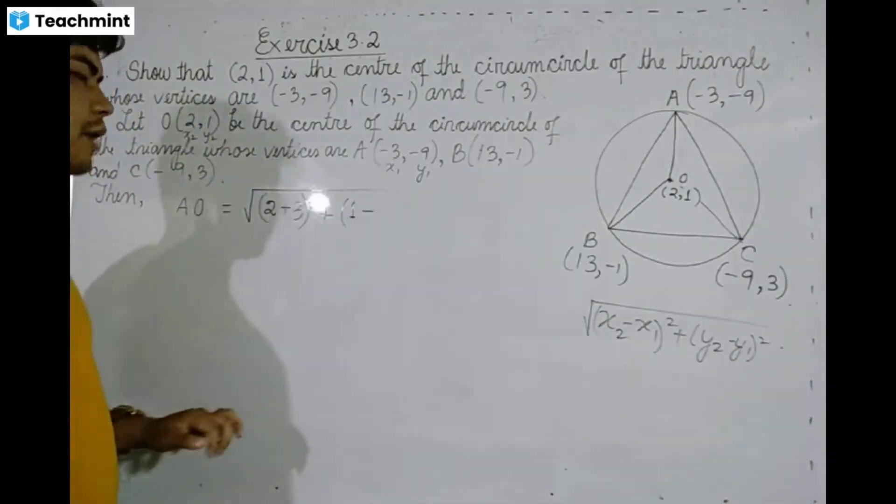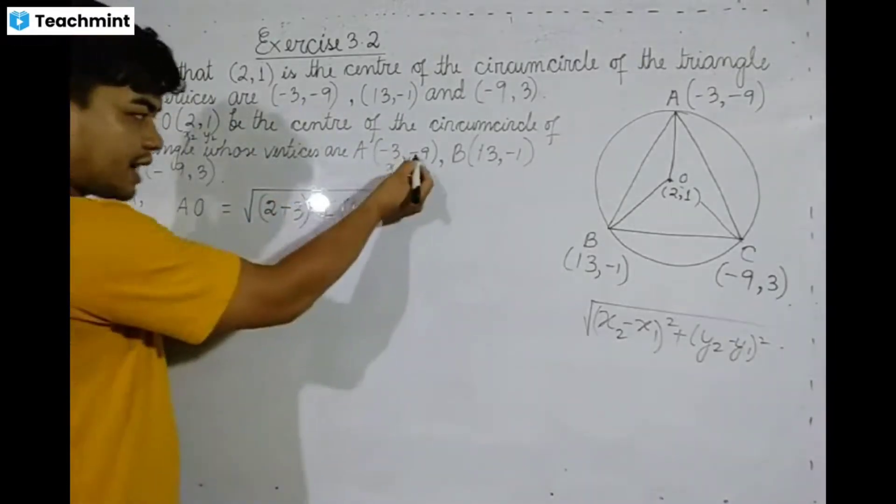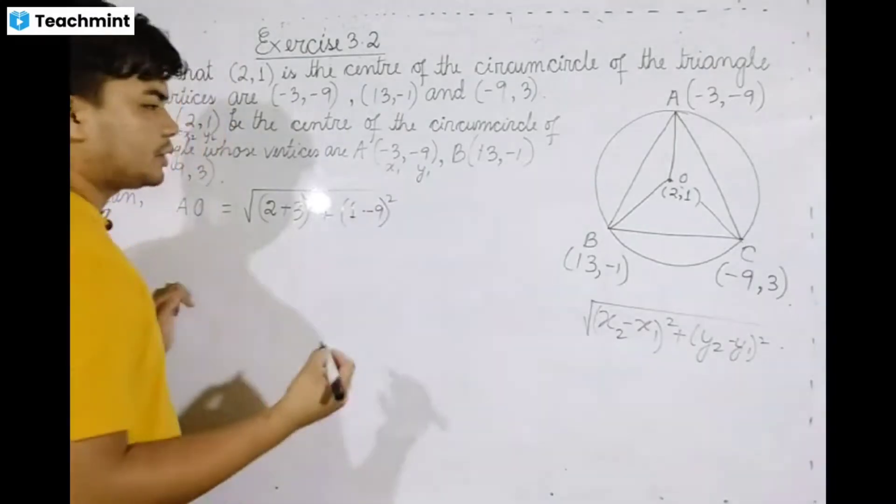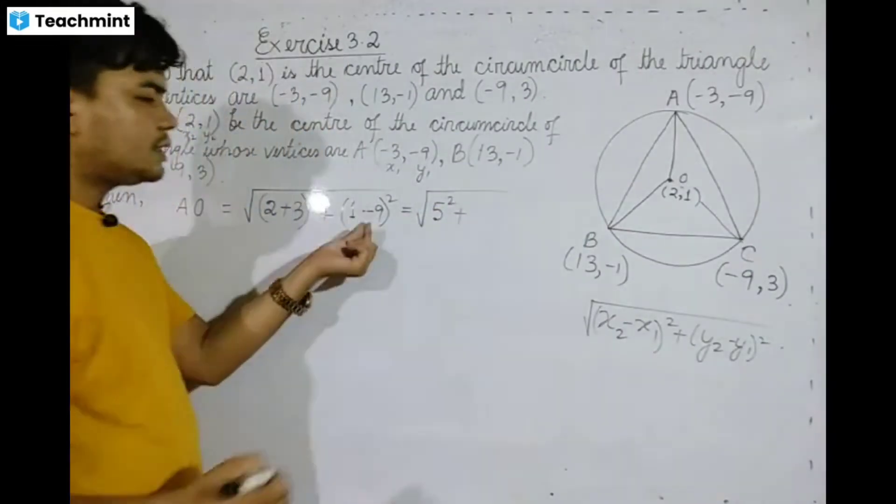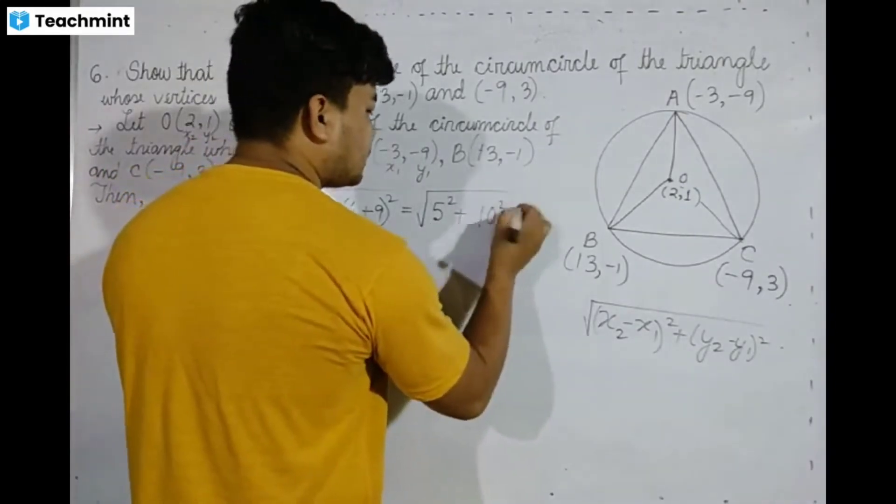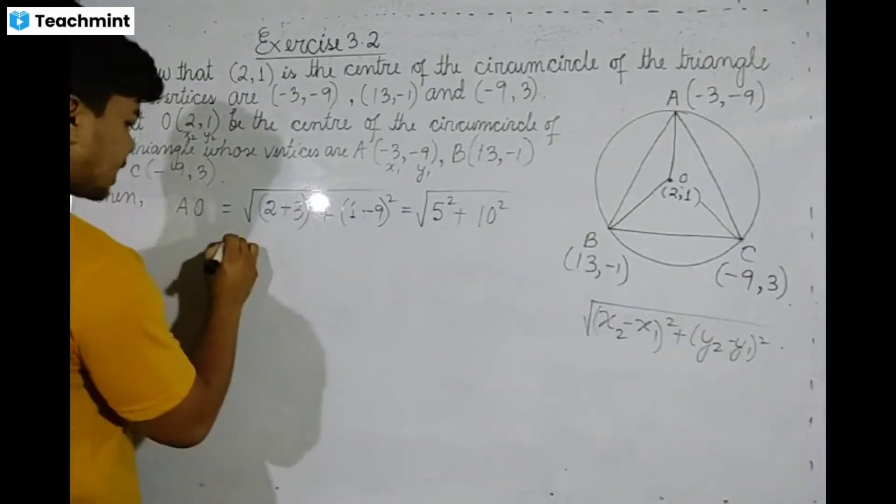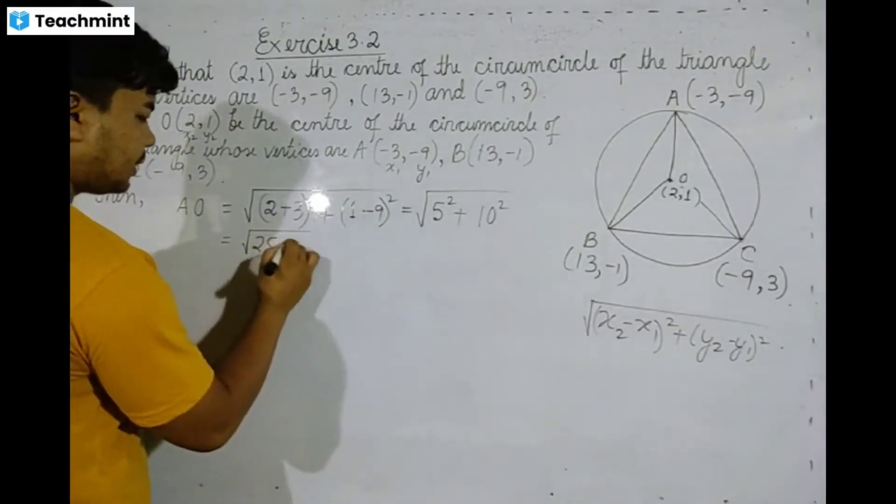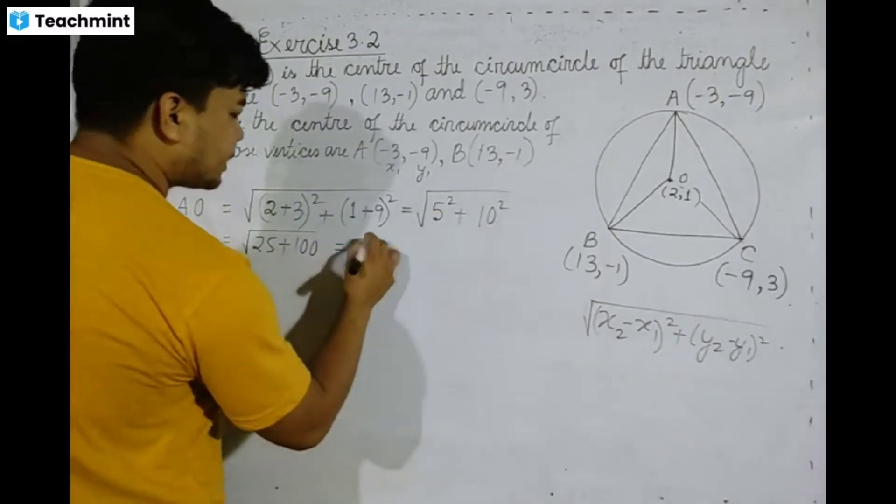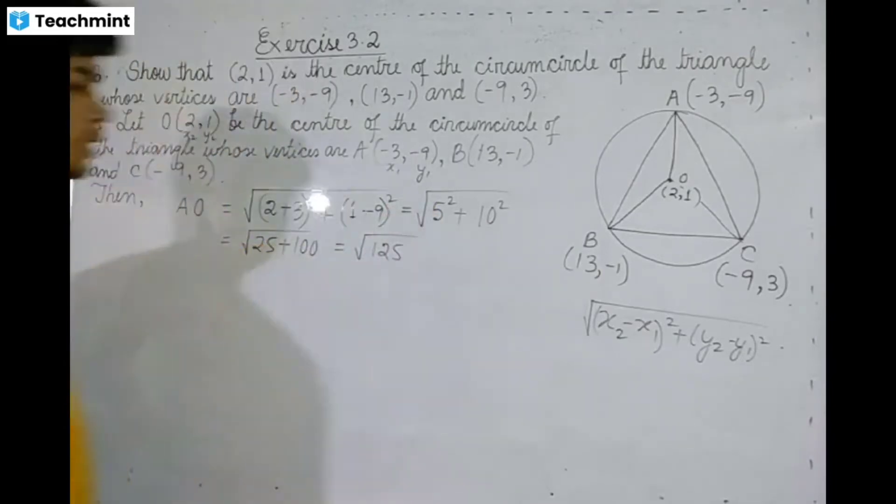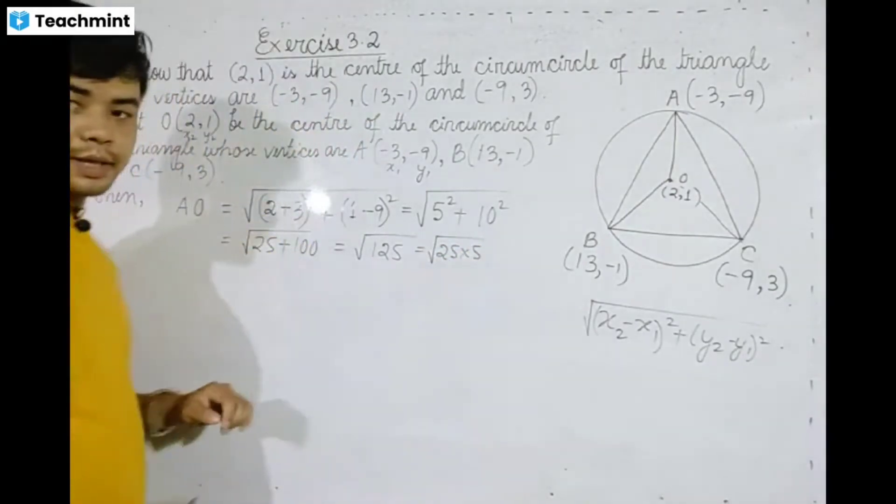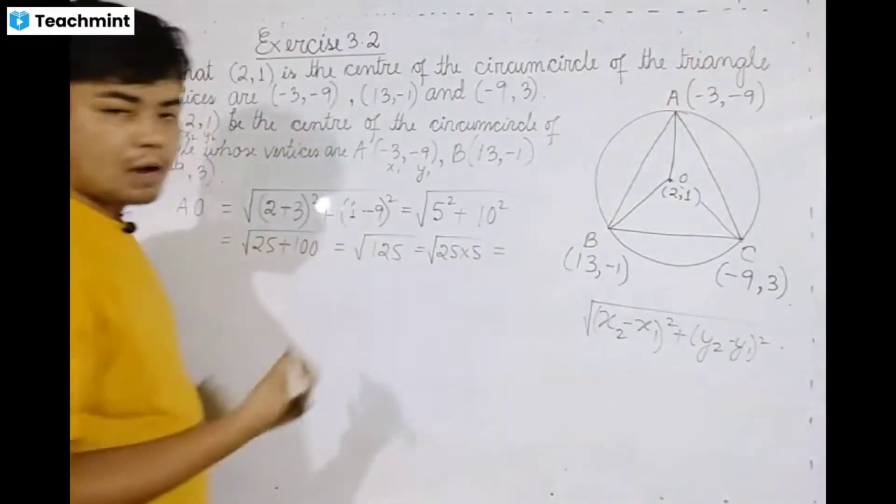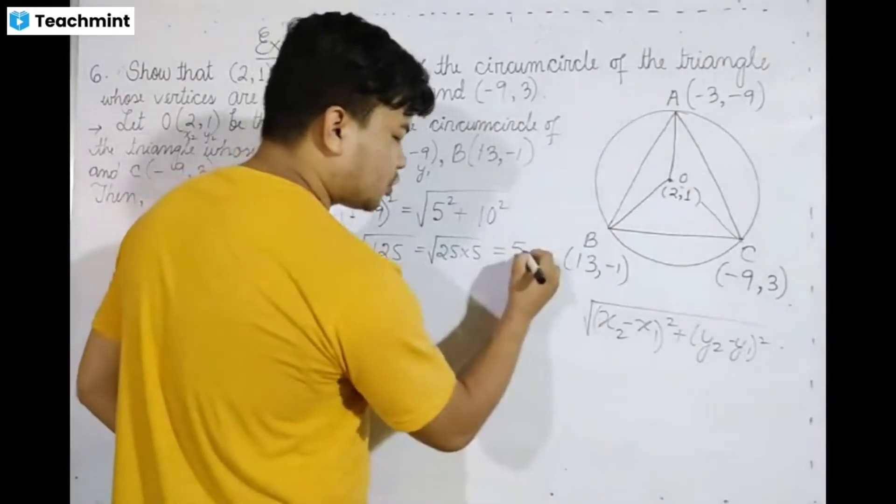This equals √[(5)² + (10)²] = √[25 + 100] = √125. Since 125 = 25 × 5, this simplifies to 5√5. So the value of AO is 5√5.